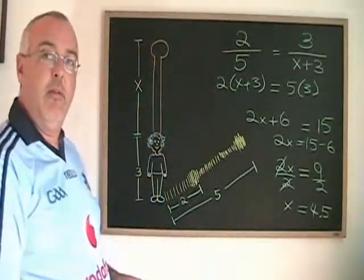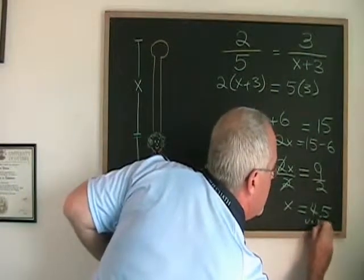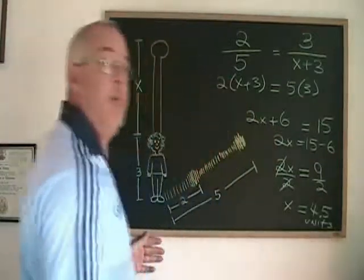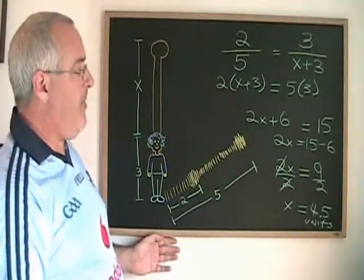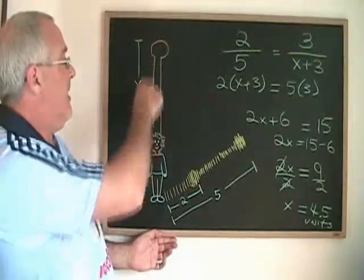No unit of measure was given in the problem, so I like to write the word units as my unit of measure. The flagpole is 4.5 units taller than Emma.